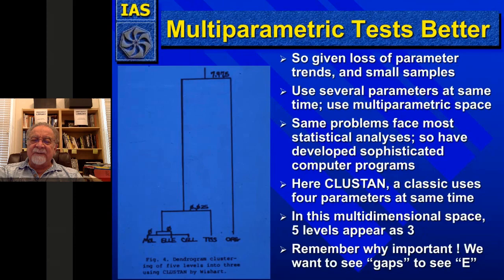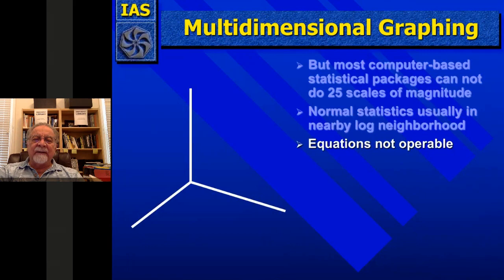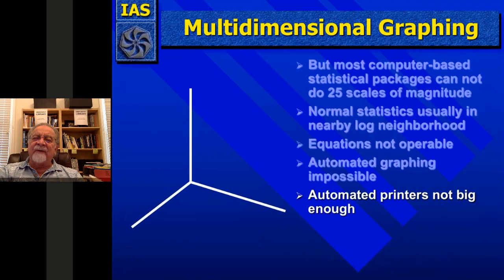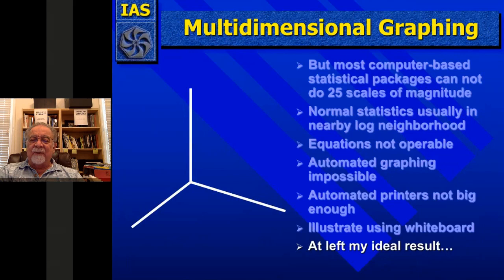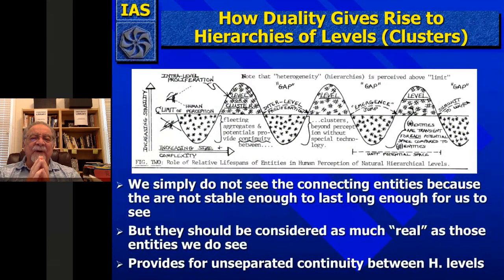What we would like to do is take the 25 scales of magnitude and use normal statistics in a three-dimensional log cube. Equations are not operable within those, but try to do automated graphing from the data directly. Automated printers were not big enough to do this in those days. My ideal result would be a series of clouds in that three-dimensional cube space with gaps between them that expressed the true dimensions of the universe in data. One of the first things is that we simply do not see the connecting entities between the levels.